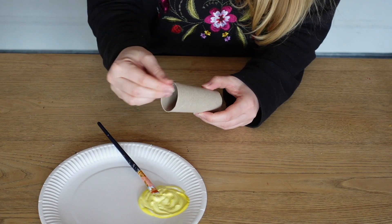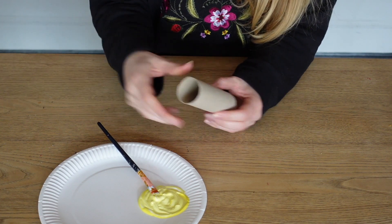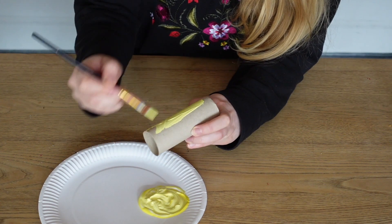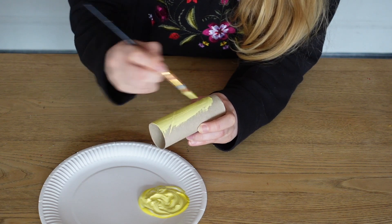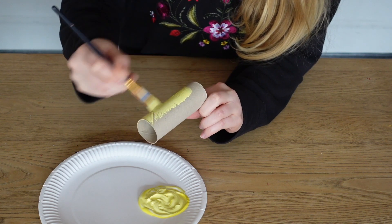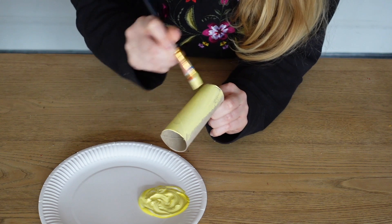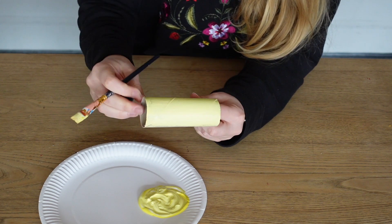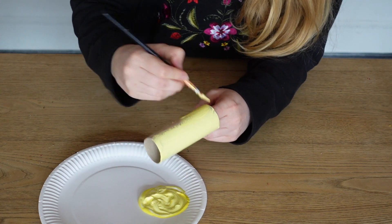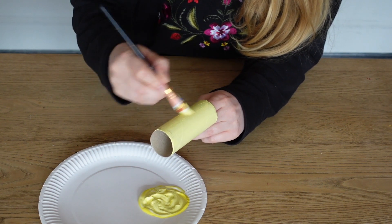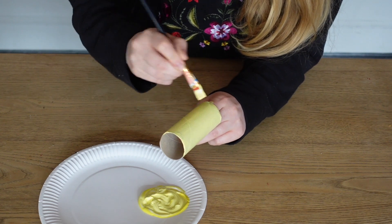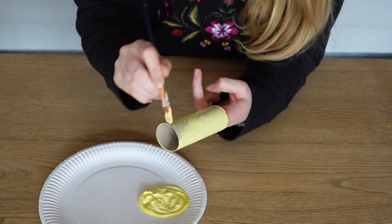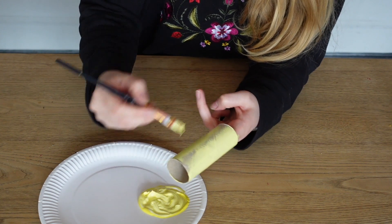First of all we're going to need to paint our toilet roll yellow for the base of the bee. So I've just got some acrylic paint here and I'm just going to give it a good old coat all the way around as much as possible. Good thing of acrylic paint is it dries quite quickly. Just be careful not to apply it too thickly otherwise that will take a while to dry.